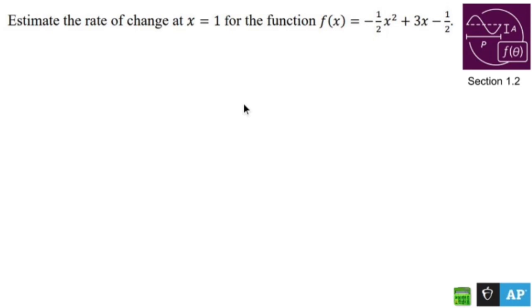Now, we know the average rate of change. The average rate of change, the a rock, is going to be f of b minus f of a over b minus a.